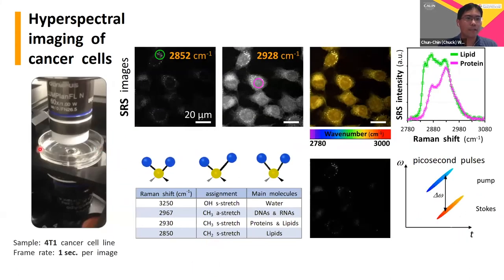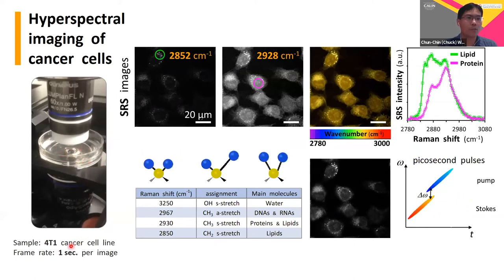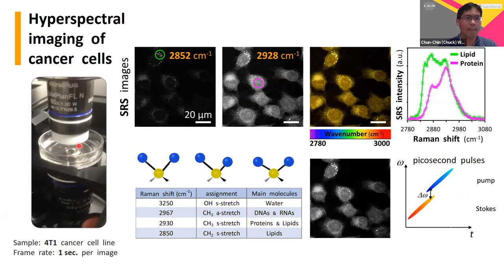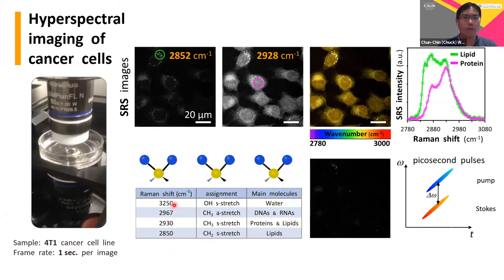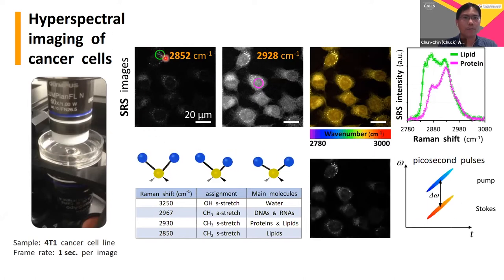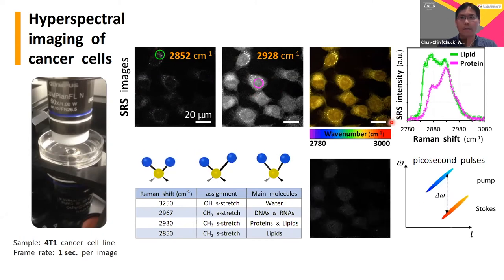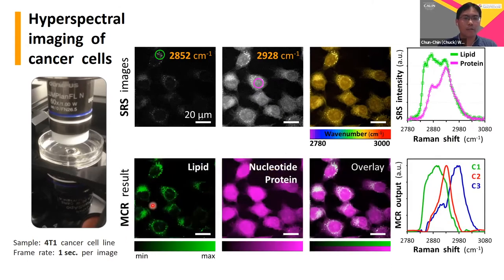Here is our setup. We grow 4T1 breast cancer cells on a glass-bottom dish. When we do a hyperspectral scan, we tune from the low wavenumber to the high wavenumber region, allowing us to probe lipid droplets, proteins, DNA, and water. When we select different regions, they show different chemical features in the Raman spectrum. We further use an algorithm to distinguish one molecule from another according to their different optical responses.